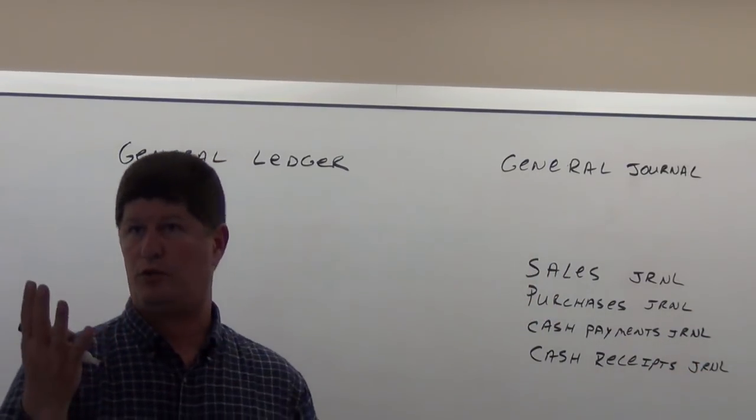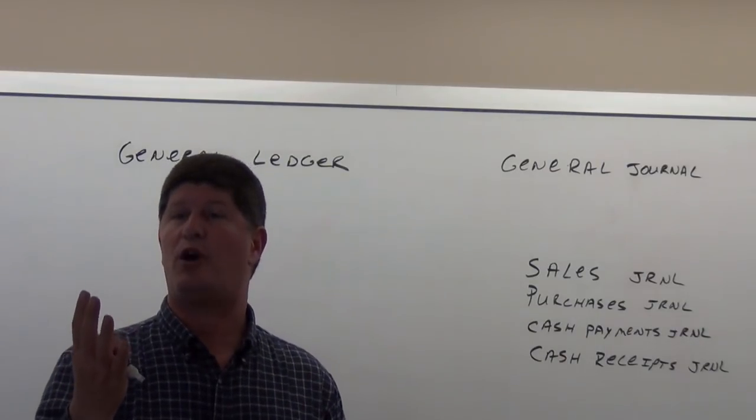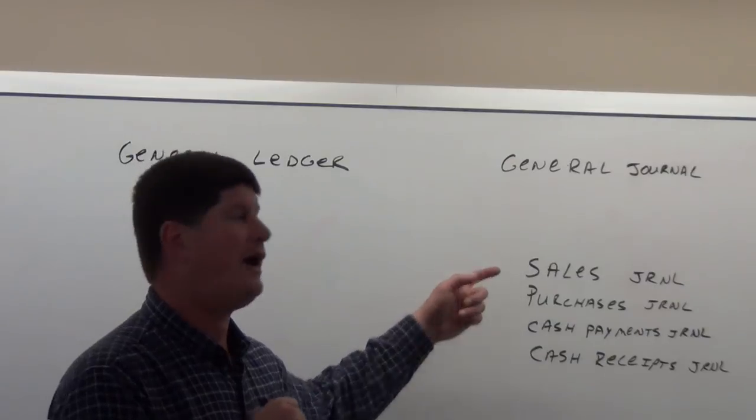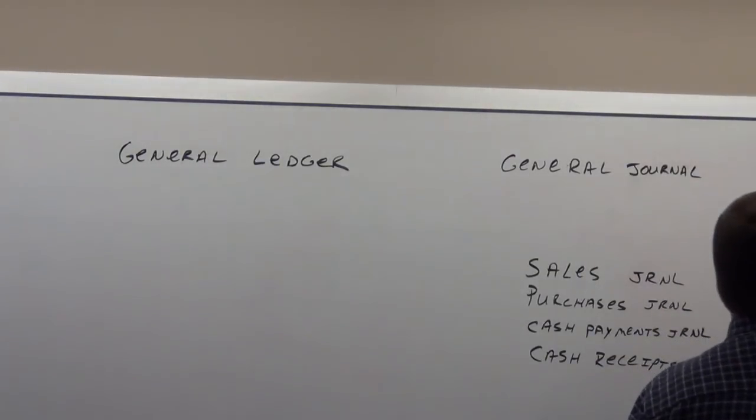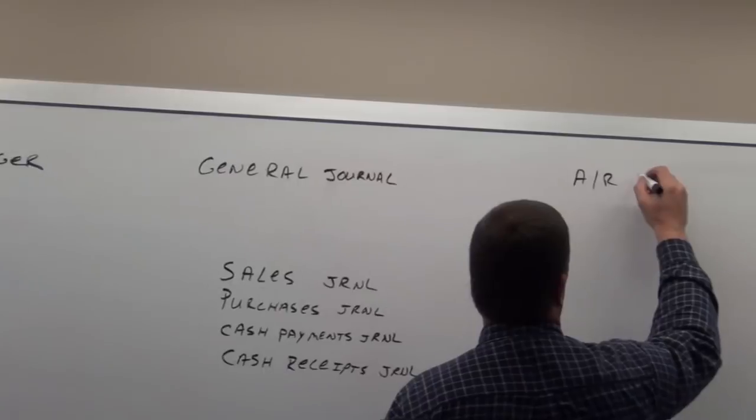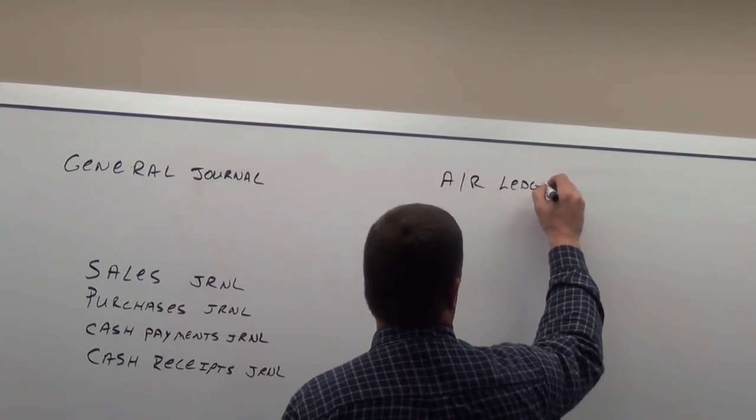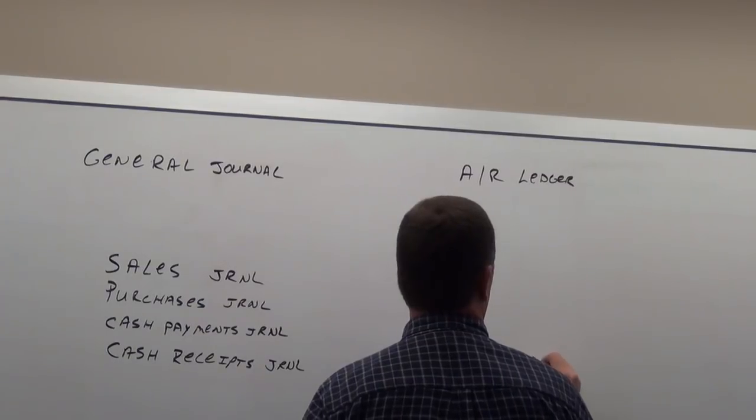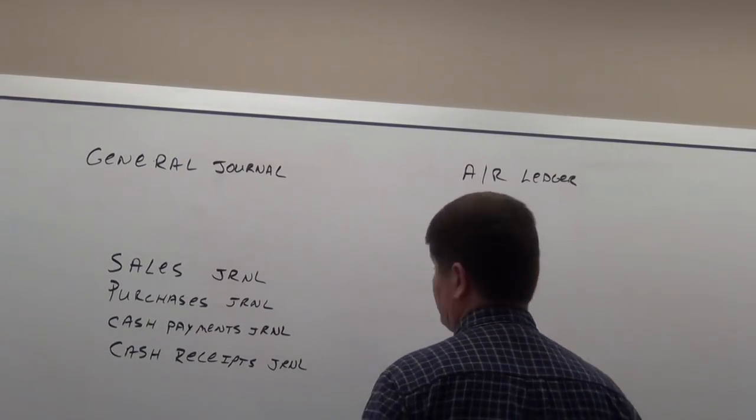So those are the four special journals that we've talked about so far. We covered the sales journal last week in class. We also talked about the accounts receivable ledger and the accounts payable ledger.